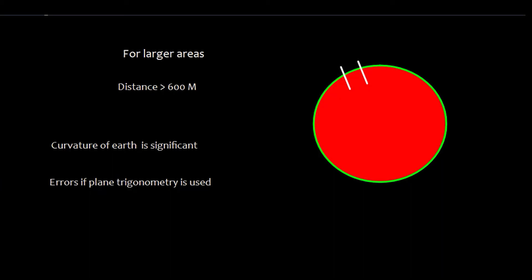However, if we are having the larger area, like this, we cannot say that this is plain. This is curved area. The curvature of Earth becomes significant and plain trigonometry has to be modified.